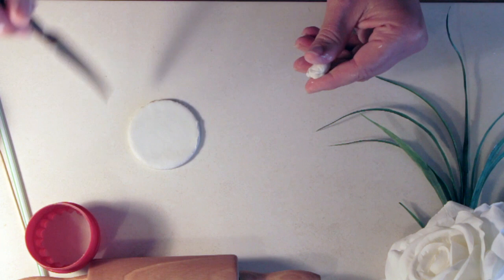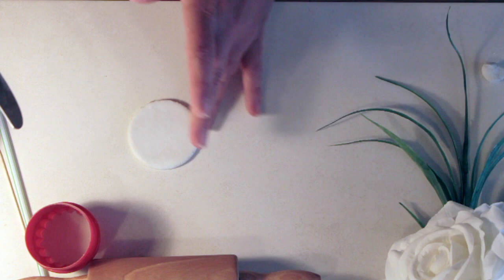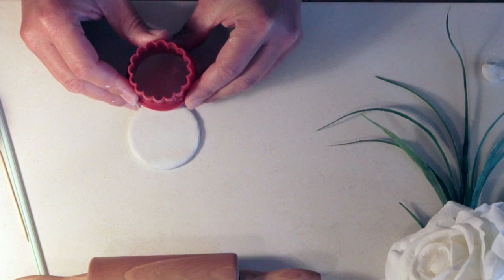The clay is very forgiving, so if we do make a mistake you can always roll it back up and start again. Or if it's just a simple little mark, you can just rub the mark back out and roll it out with your finger.